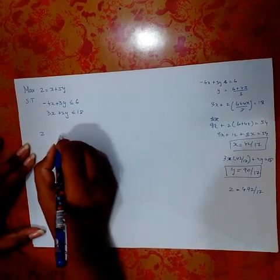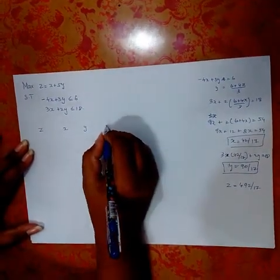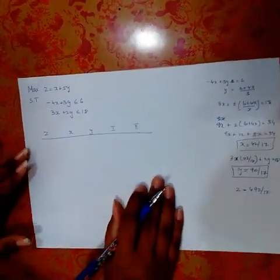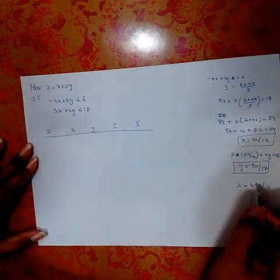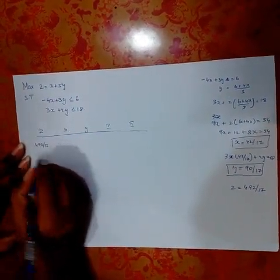Now we'll go ahead with the table. The table will contain z which is the profit or maximizing value, x the first variable, y the second variable, equations 1 and 2.